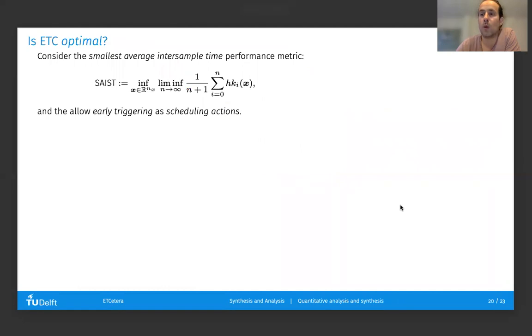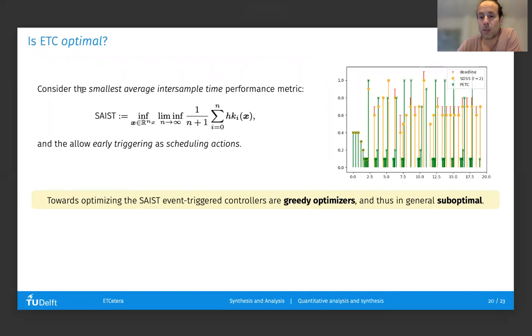Finally, we are also interested in quantifying how good an event-triggered control system is. There are other metrics that we have been implementing in ETCetera, but one simple one would be measuring the smallest average inter-sample time of a given event-triggered control system. If we allow earlier triggering as scheduling actions, one may observe that event-triggered controllers are simply greedy approaches towards trying to optimize the inter-sample time, and therefore would be suboptimal in general.